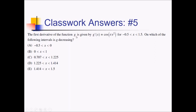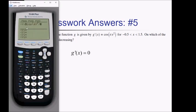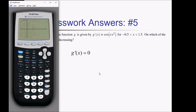On this problem, the first derivative of g is given by g' equals cosine of pi x squared, on the interval from negative 0.5 to 1.5. We want to know on which interval g is decreasing. This is a calculator question, and they already gave you the derivative of g. We graph g' equals cosine of pi x squared using x min of negative 0.5 and x max of 1.5, then zoom fit. Make sure you're in radians mode. We can see the graph crosses the x-axis twice.